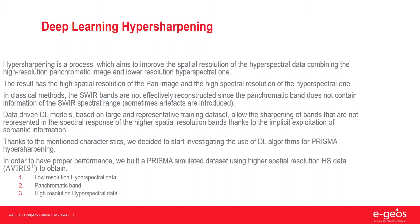Currently, data-driven deep learning models, which are based on large and representative training datasets, implicitly exploit semantic information, hence are able to allow the sharpening of bands that are not represented in the spectral response. Thanks to these characteristics, we decided to start investigating the use of deep learning algorithms for PRISMA hypersharpening. We simulated the data using higher spatial resolution hyperspectral data, namely AVIRIS, to obtain lower resolution hyperspectral data and a panchromatic band to be used as input, and higher resolution hyperspectral data to be used as output.